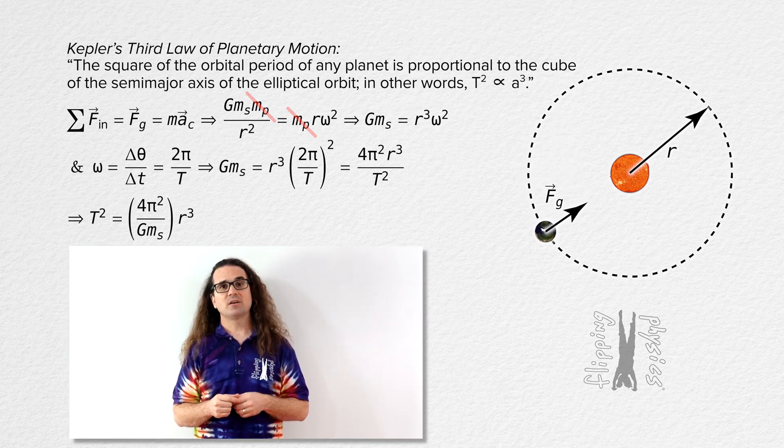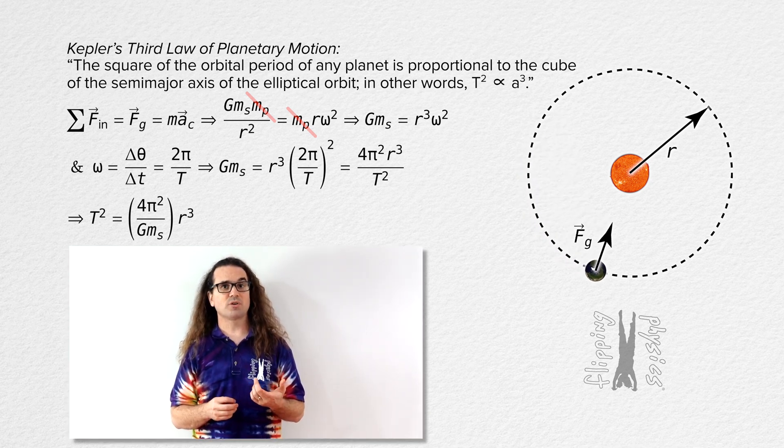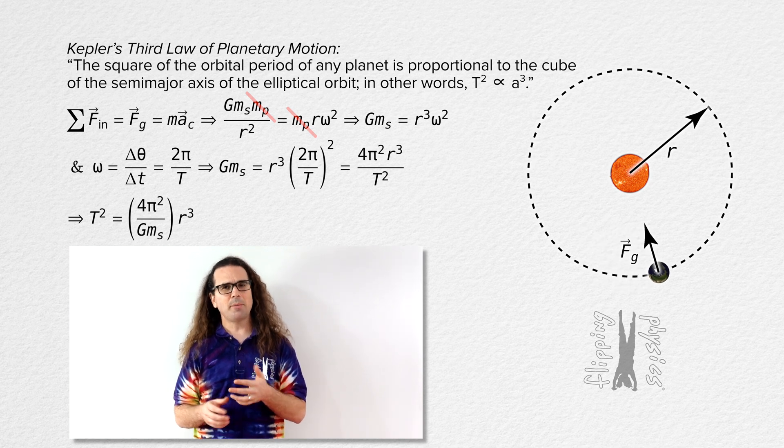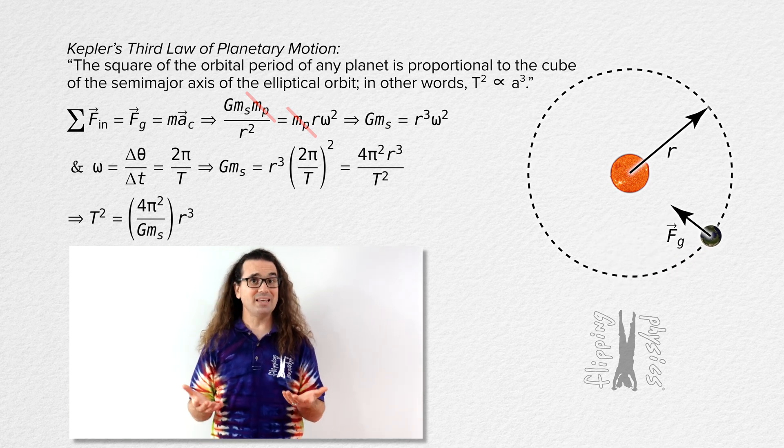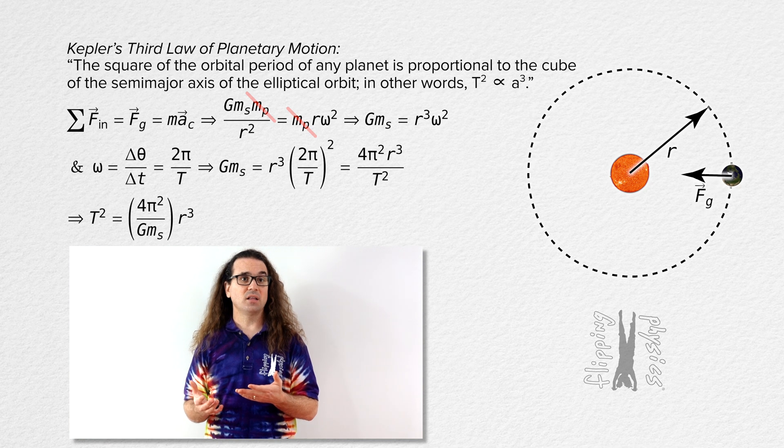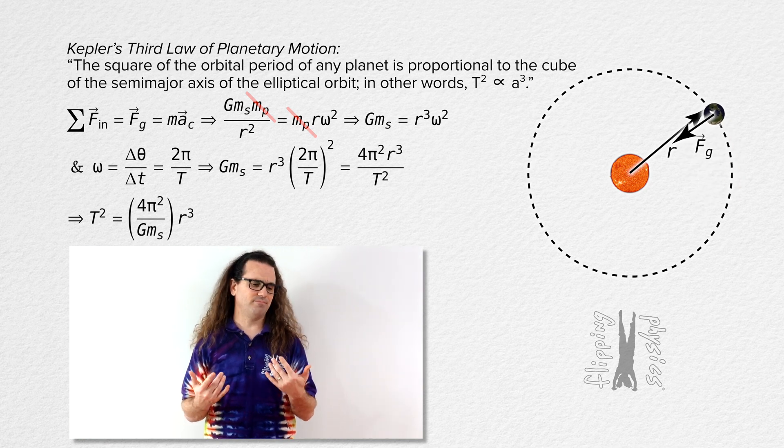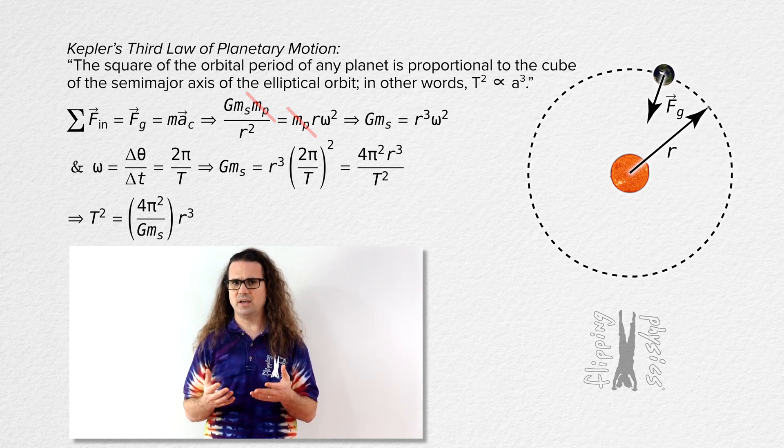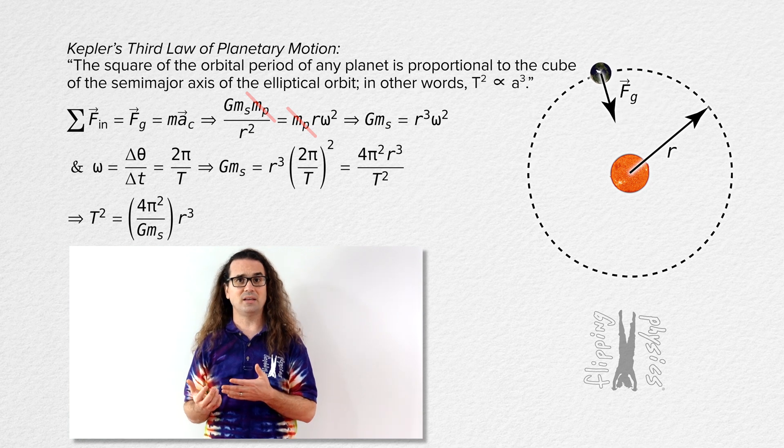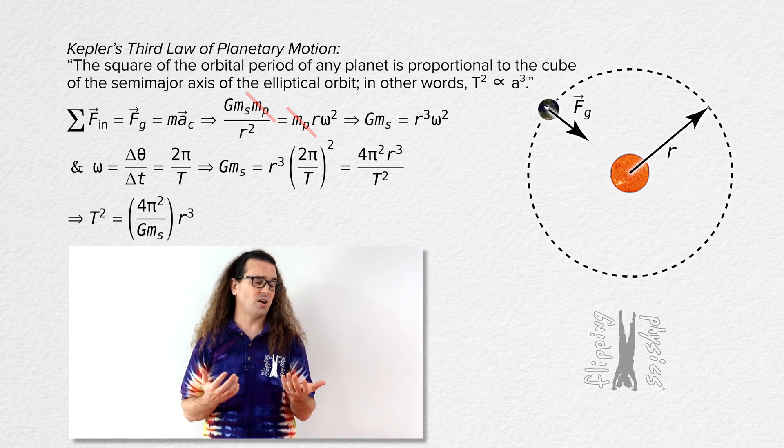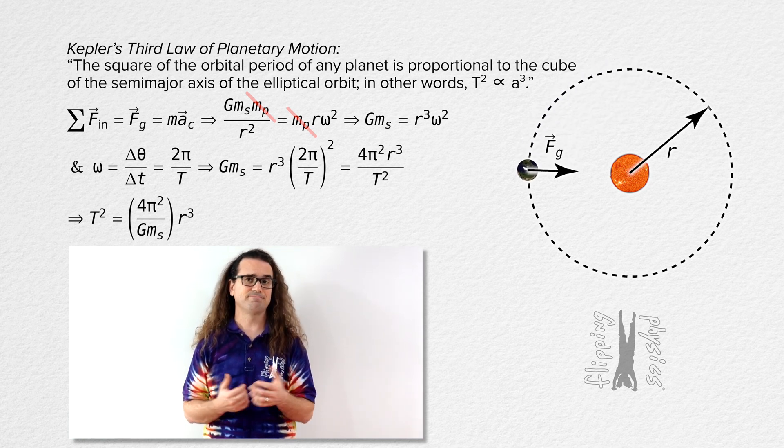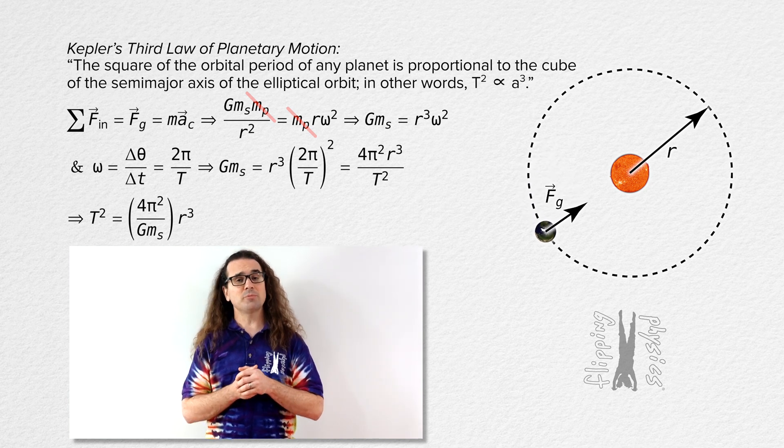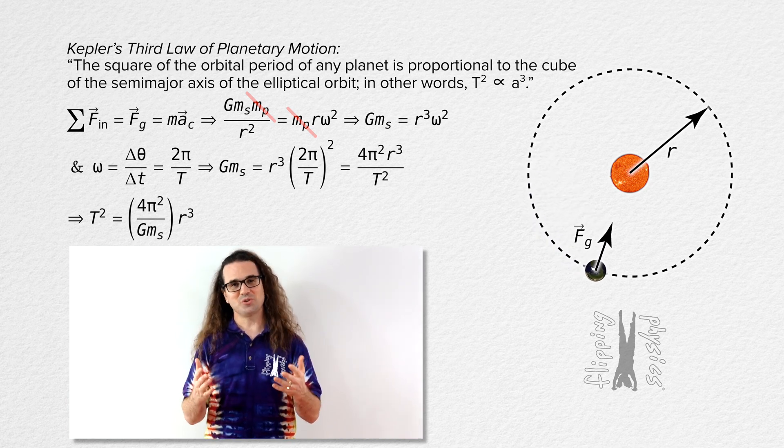I will also point out that while our derivation was for the Sun and a planet, Kepler's Third Law is applicable to any satellite orbiting the Sun, like asteroids or comets. Actually, Kepler's Third Law is applicable to any satellite in orbit around any single star, not just our Sun. Thank you very much for learning with me today. I enjoy learning with you.